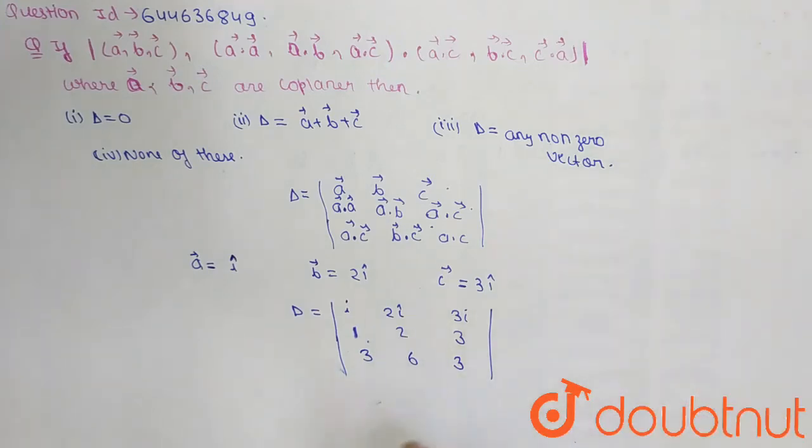Now from here we will get 1, 2, 3 and 3, 6, 3 in the given determinant. Now we have to solve this given determinant.